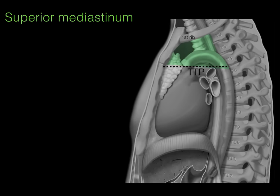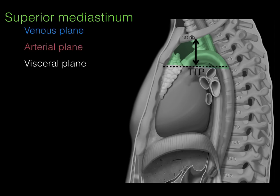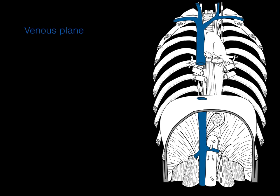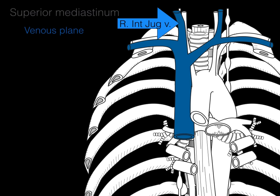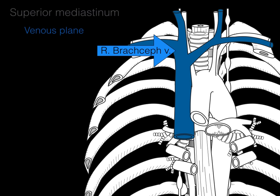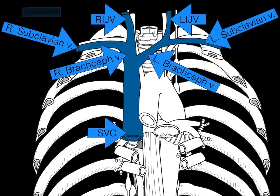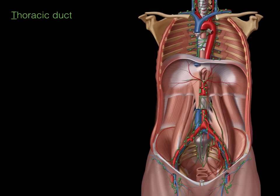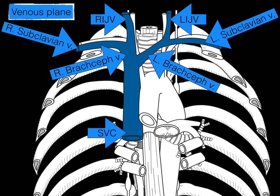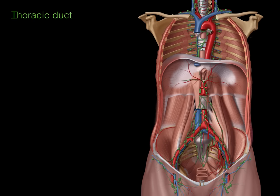Now let's go into the superior mediastinum, located between the first rib and the transverse thoracic plane. It has three planes from front to back: venous, arterial, and visceral. In the venous plane, the right internal jugular vein joins the right subclavian vein to form the right brachiocephalic vein. Likewise on the left. Both brachiocephalic veins come together to make the superior vena cava, which drains into the right atrium. Let's also complete the story of the thoracic duct in the superior mediastinum.